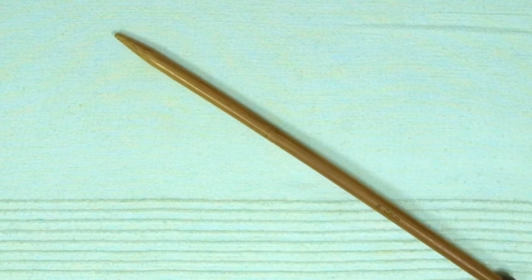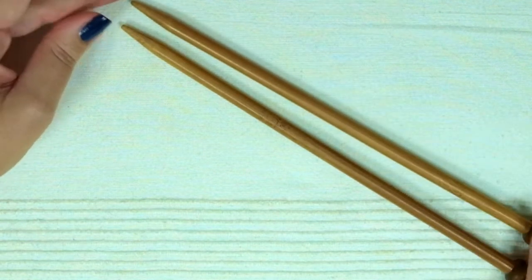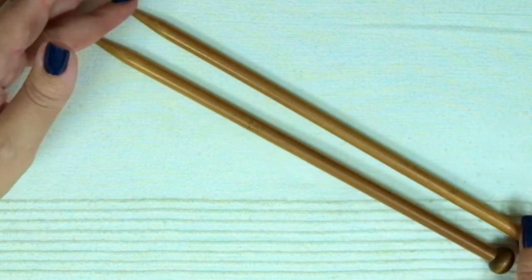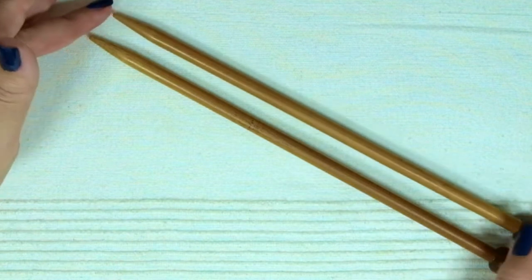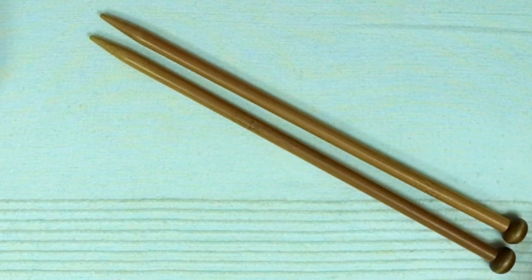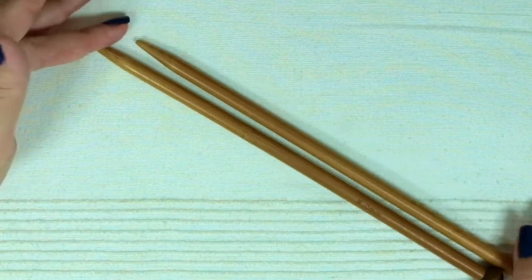My suggestion when you're starting to knit is to use US size number 10, UK number 4, or 6 millimeters or more, so you can clearly see what you're doing.